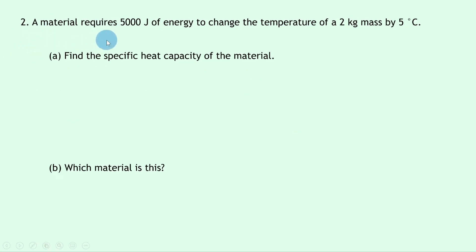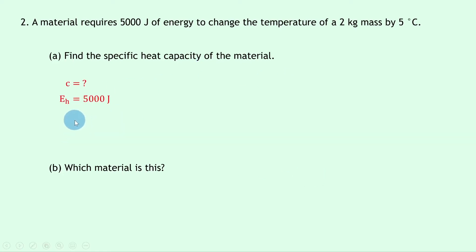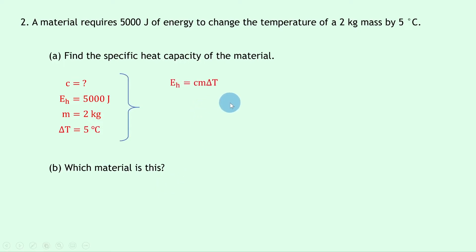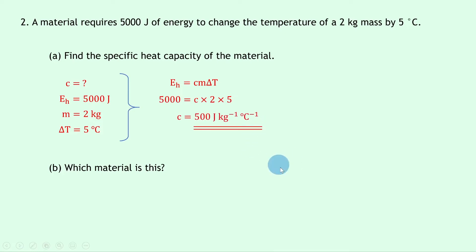Question two says a material requires 5,000 joules of energy to change the temperature of a two kilogram mass by five degrees celsius. Part a says define the specific heat capacity of the material. We're trying to find c, with E_H = 5,000 J, m = 2 kg, and delta T = 5°C. Using E_H = cm·delta T gives 5,000 = c × 2 × 5, so c = 5,000 ÷ 10 = 500 J/kg/°C.